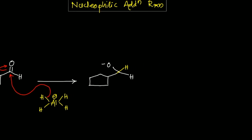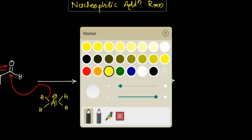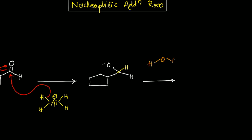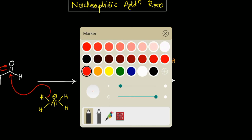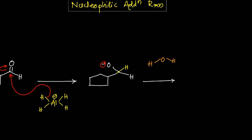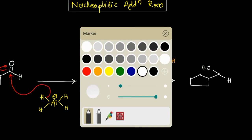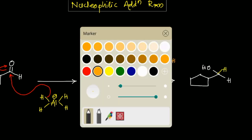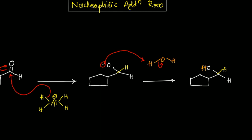The alkoxide intermediate is then treated with water in the second step — not the first step, because adding water in the first step would destroy the LiAlH4 reagent. After adding water, the final reduced alcohol product is obtained. The hydrogen shown in yellow comes from the reagent and the orange hydrogen comes from the water.